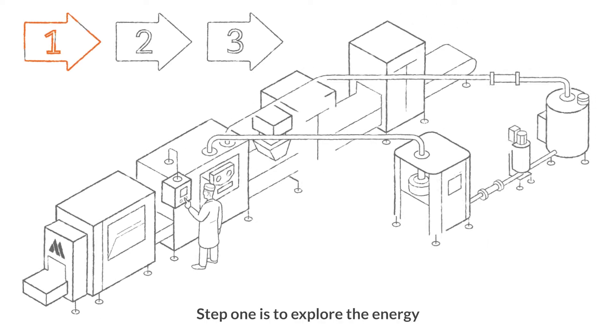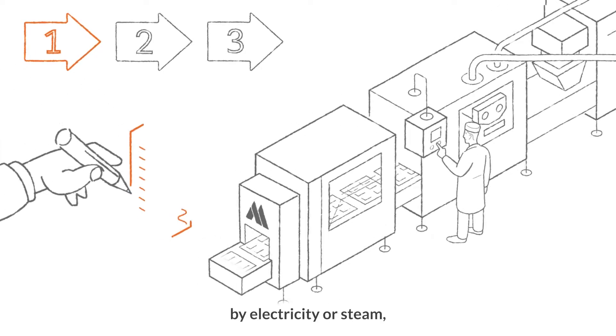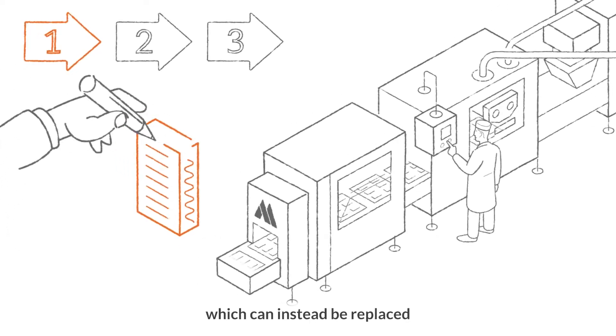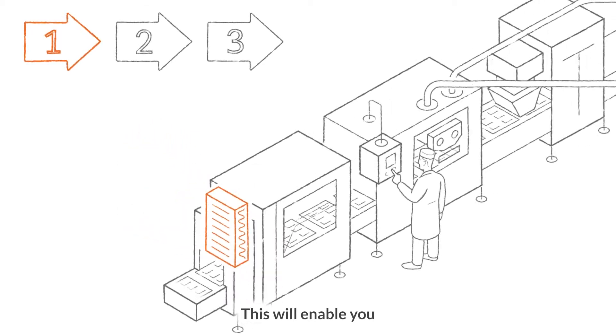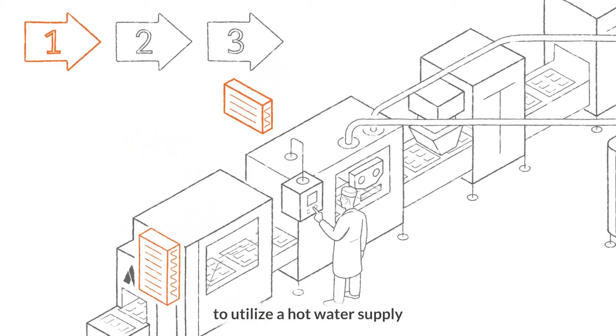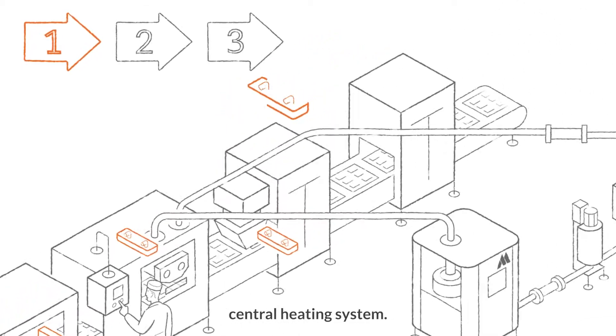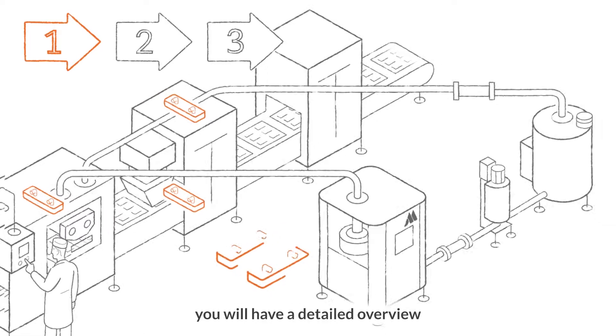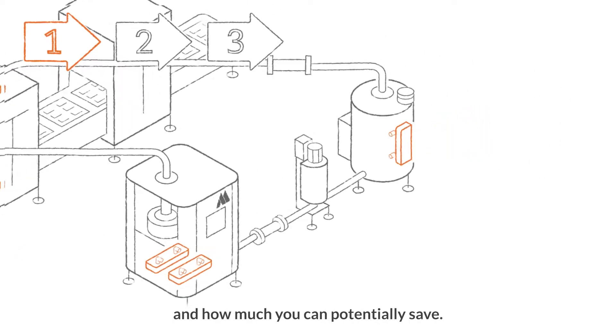Step one is to explore the energy supply for your equipment. Most heating is powered by electricity or steam, which can instead be replaced with heat exchanges. This will enable you to utilize a hot water supply for your equipment that's powered by a more efficient central heating system. At this step, you will have a detailed overview of your energy consumption and how much you can potentially save.